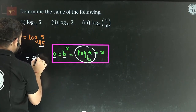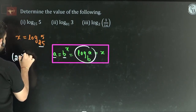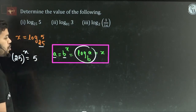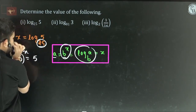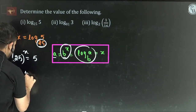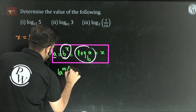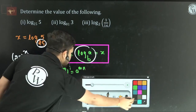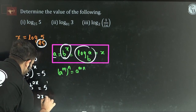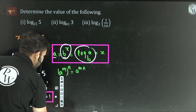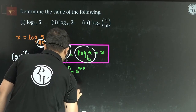Now think logically. Can I write 25 to the power of x equals 5? Well, 25 equals 5 squared. So we have 5 squared to the power of x equals 5 to the power of 1. Using the exponent property, that becomes 5 to the power of 2x equals 5 to the power of 1. Whenever bases are equal, powers are equal, so 2x equals 1, meaning x equals 1 by 2. The problem is over.